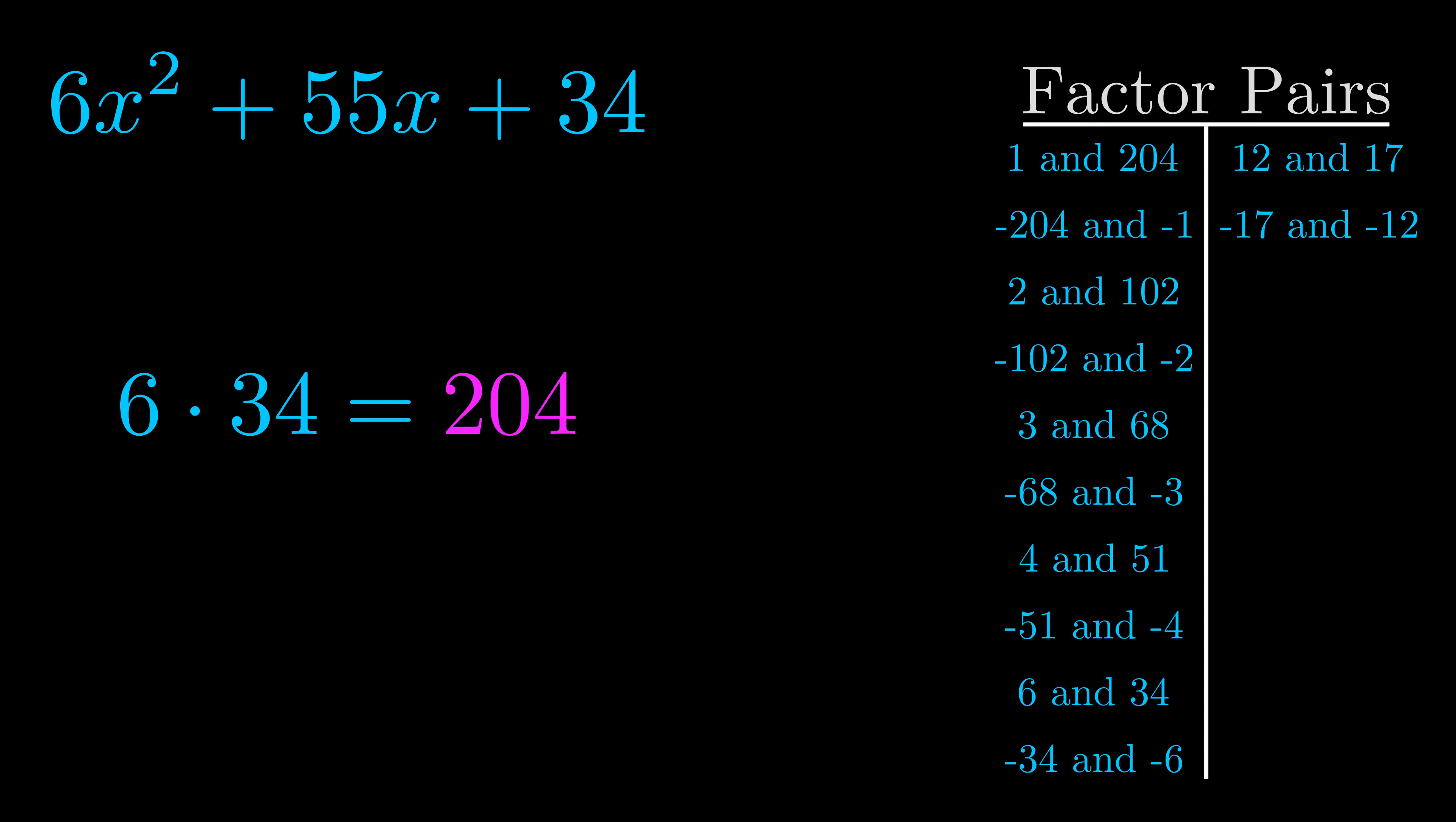Now once you have these factor pairs, the goal is to find which of these pairs adds to the b value.